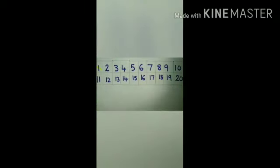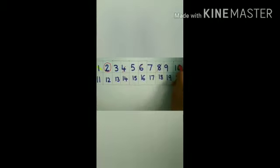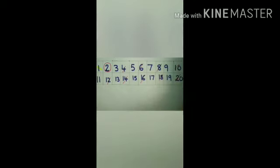Now the smallest prime number is 2. Circle 2 and cancel all the multiples of 2 which includes all the even numbers.